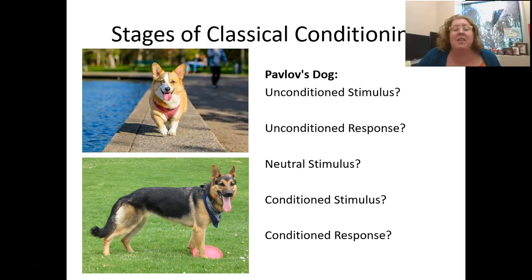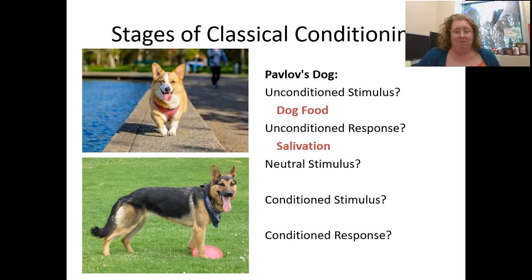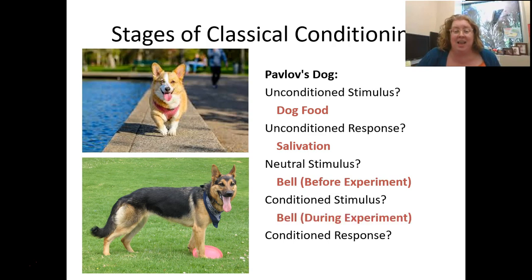So that's the Pavlov dog experiment. The unconditioned stimulus was the dog food — he didn't have to train them to do anything with the food; the response of salivation just automatically happened. The neutral stimulus in the beginning was the bell — before the experiment, ringing a bell for a dog wouldn't have produced any response. Then once he associated the bell with the dog food, the bell became the conditioned stimulus. And the conditioned response at the end was salivation — even when there was no food, the dog still salivated. Be sure that you could name all of those parts for any kind of classical conditioning.